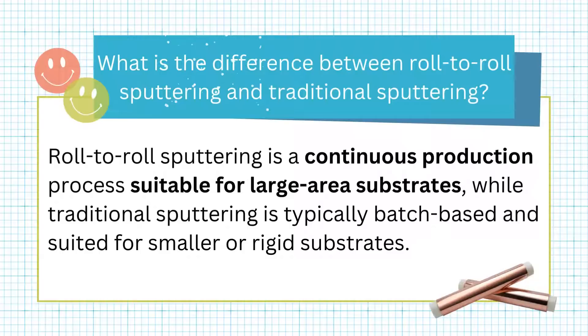What is the difference between roll-to-roll sputtering and traditional sputtering? Roll-to-roll sputtering is a continuous production process suitable for large area substrates, while traditional sputtering is typically batch-based and suited for smaller or rigid substrates.